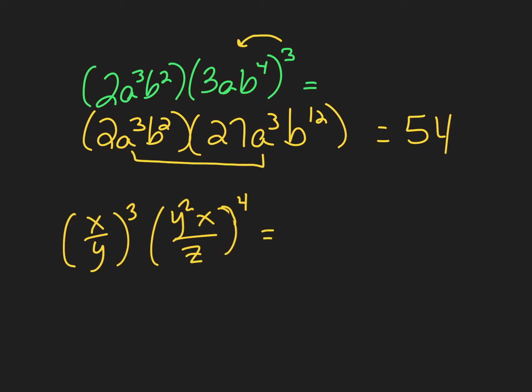Now I'm ready to multiply. So twenty-seven times two is fifty-four. And because I'm multiplying, I'm going to add the exponents, a to the sixth. Because I'm multiplying, I'm going to add the exponents, b to the fourteenth. All there is to it.